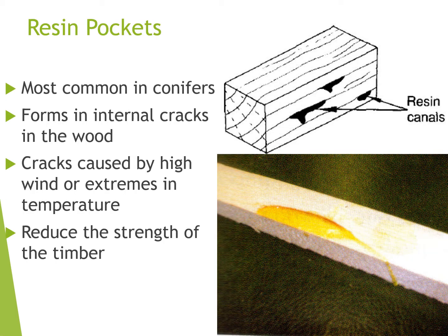Resin pockets are most common in conifers — the likes of Sitka spruce or Christmas trees, the ones that produce cones. They form in internal cracks in the wood, caused by high winds or extremes in temperature. A very warm summer and a very cold winter could cause resin pockets. It reduces the strength of the wood, and it is basically the sap that is coming out of the tree.